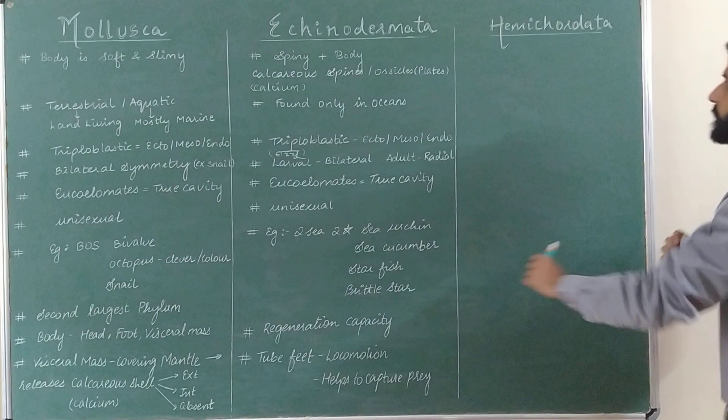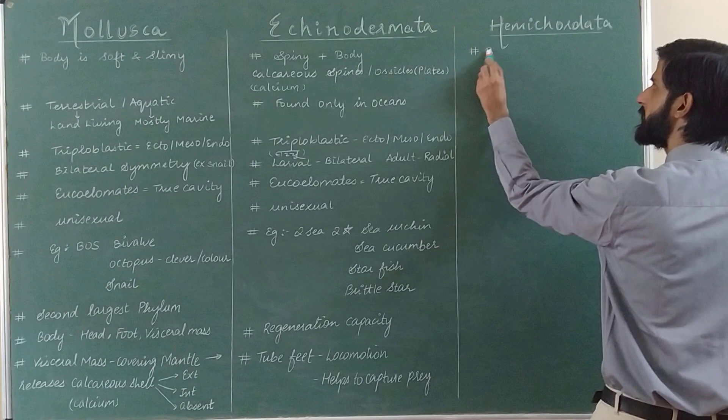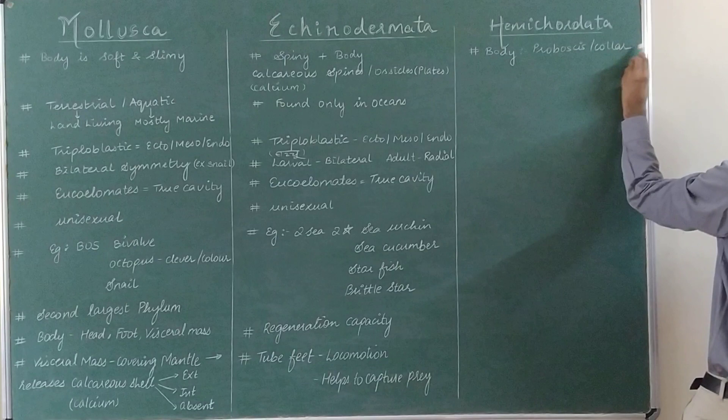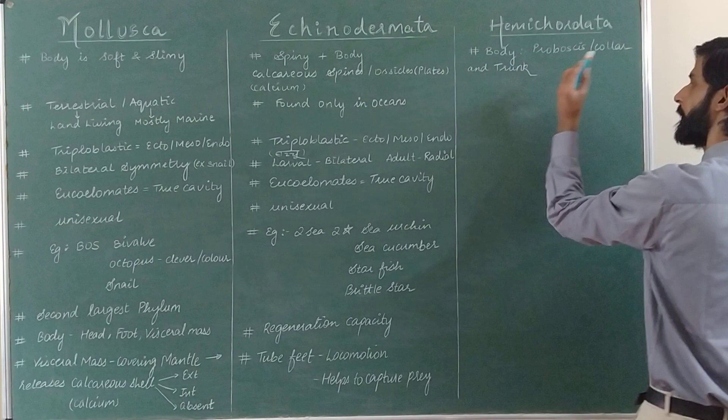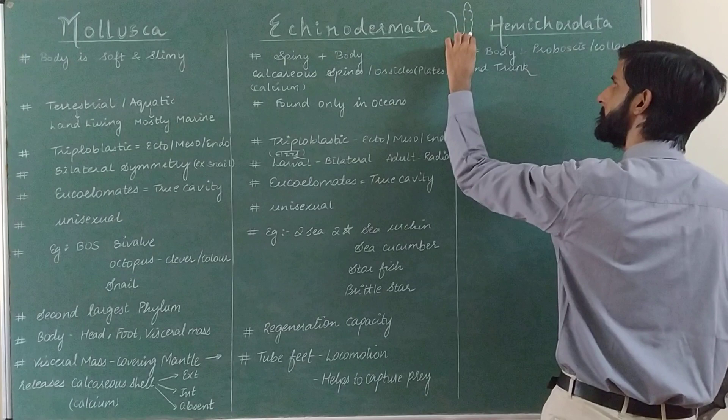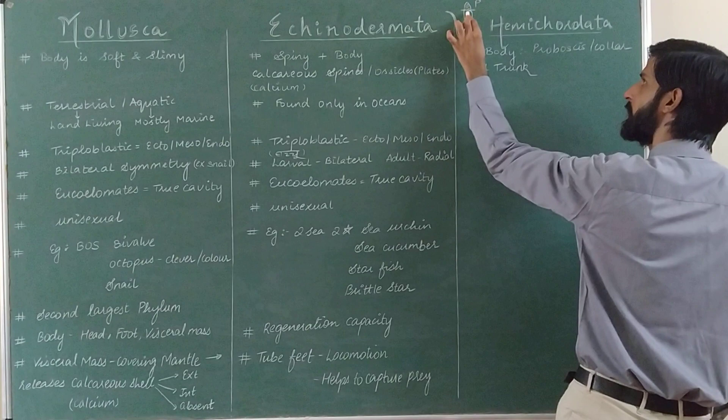Moving on, the last phylum for today is Hemichordata. In Hemichordata, the body of the animals is divided into three parts. The first part is called the proboscis, the second part is called the collar, and the third part — the remaining body — is called the trunk.